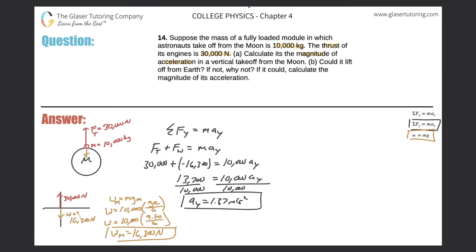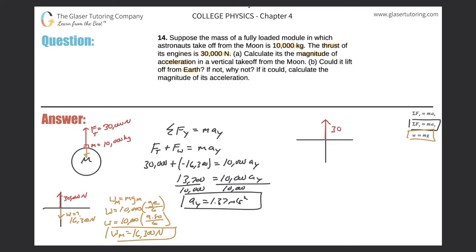For part b, it asks: could it lift off from Earth? If not, why not? And if it can, calculate it. We go through the same free body diagram, but this time on Earth. The thrust is still the same — the engines haven't changed — so the upward thrust is still 30,000 newtons. The mass hasn't changed either, but the weight of the object has changed because it's in a stronger gravitational field.